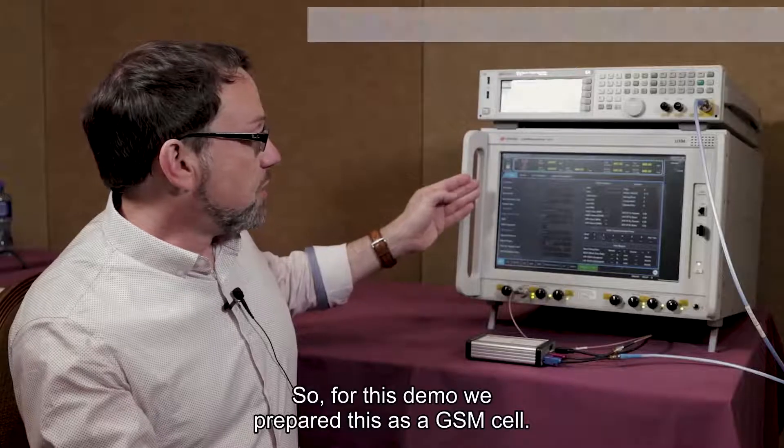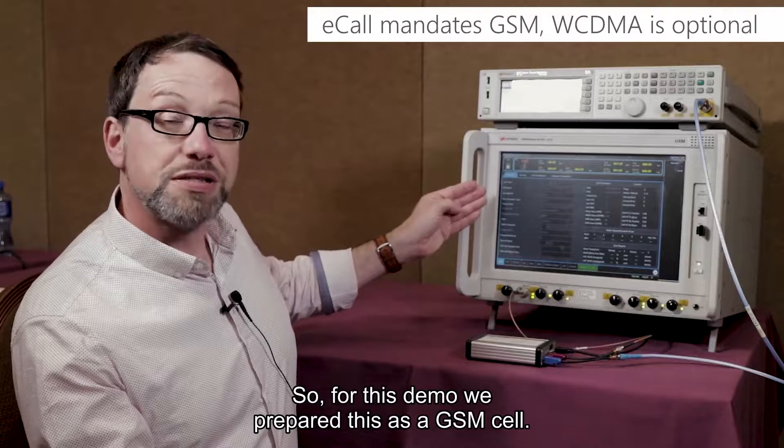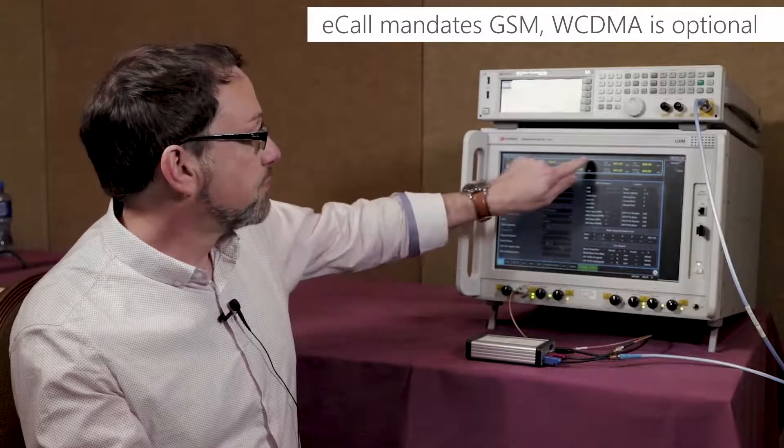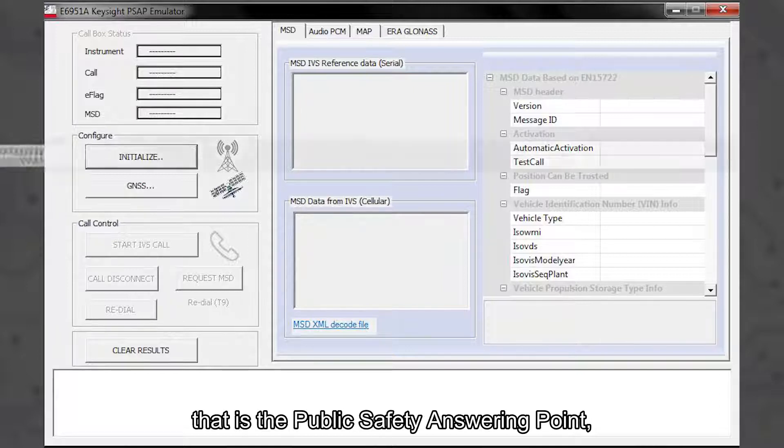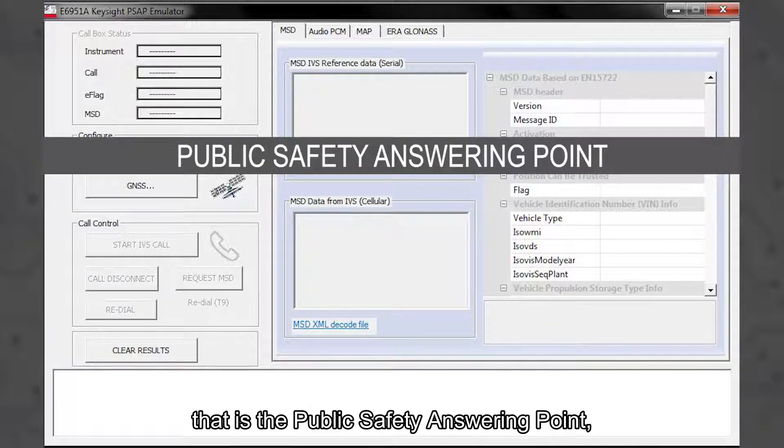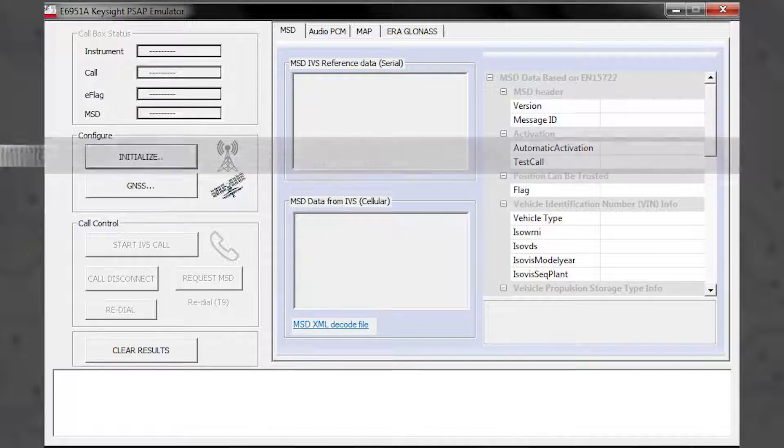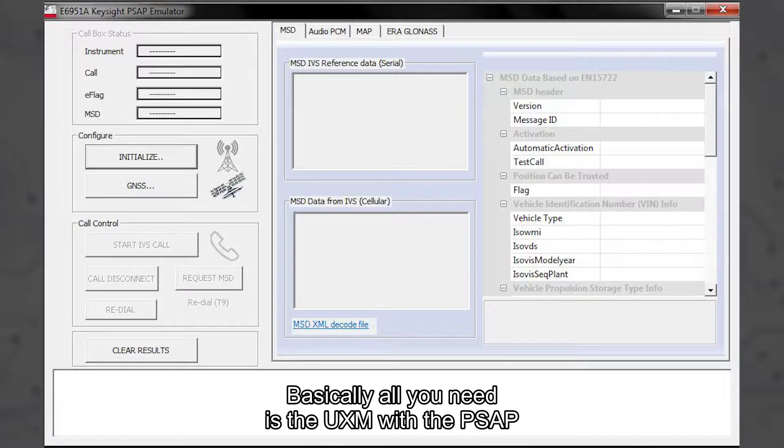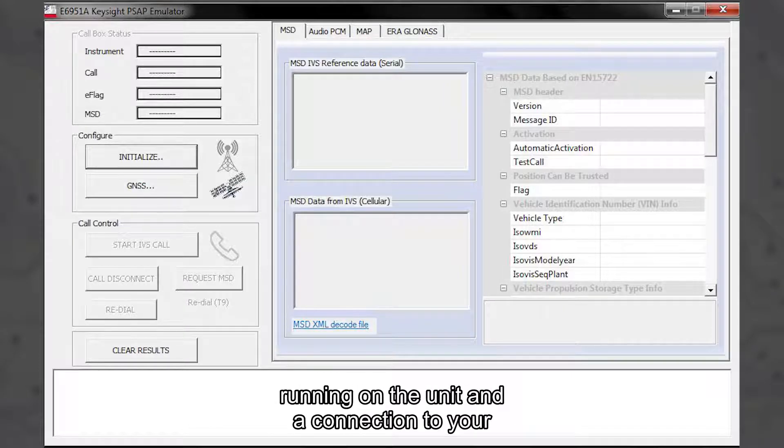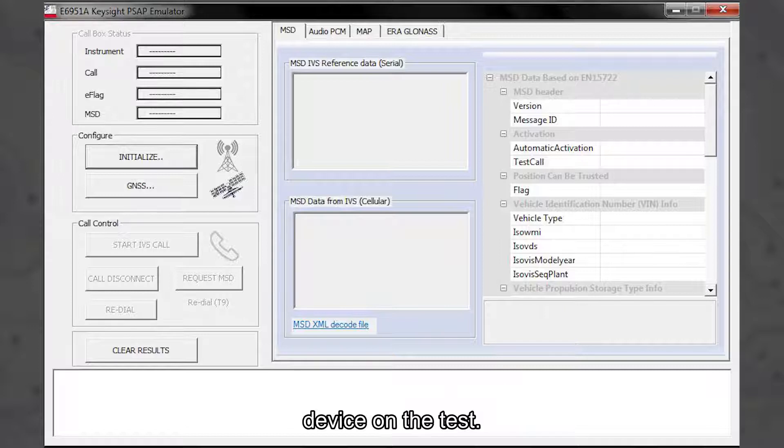So for this demo we prepared this as a GSM cell. On this machine we have the PSAP, the public safety answering point, directly installed on the UXM. So there's no fuss with external cables. Basically all you need is the UXM with the PSAP running on the unit and a connection to your device on test.